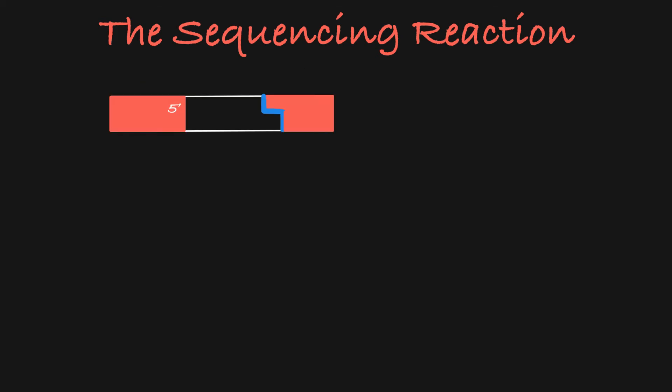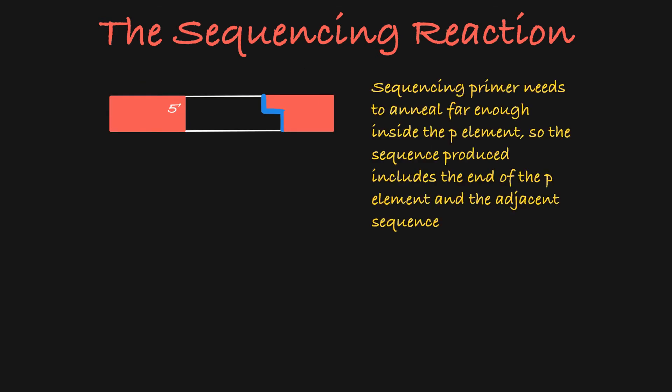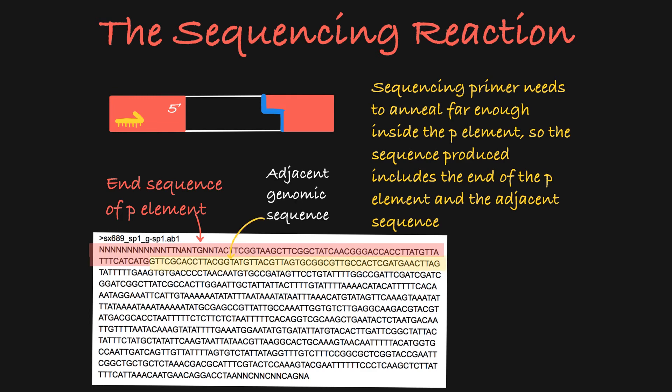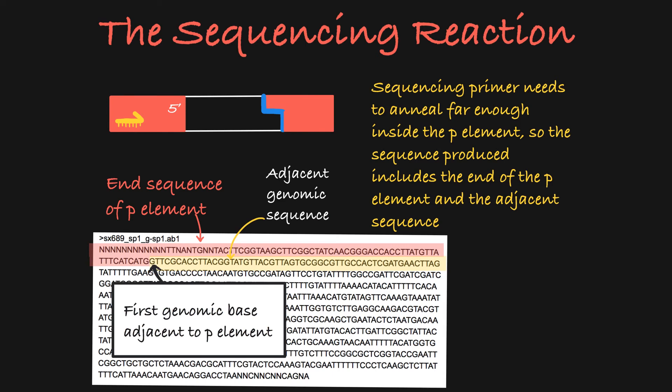Because of this limitation, the sequencing primer needs to anneal far enough into the P element that the resulting sequence still contains the ending sequence of your P element. That way, you can confidently deduce the first genomic base adjacent to your P element.